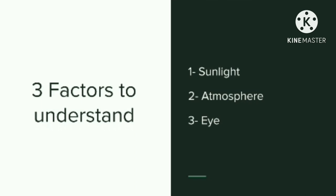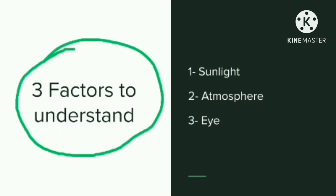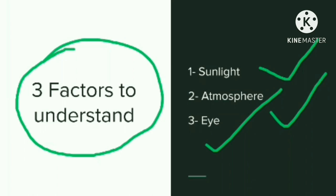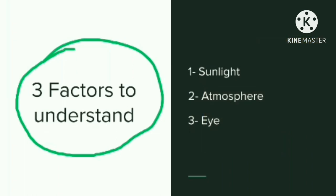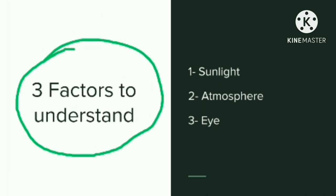The first factor is sunlight, which is made out of light of many different wavelengths. The second is the Earth's atmosphere, which is made up of molecules that scatter different wavelengths of light by different amounts. And the third is the sensitivity of our eyes. These three factors are going to make a big impact in understanding this answer. Let's look at each one.